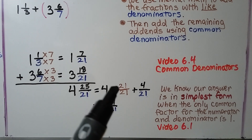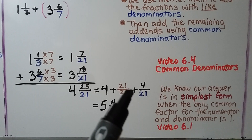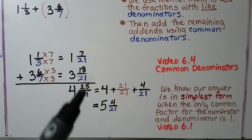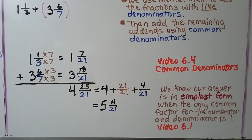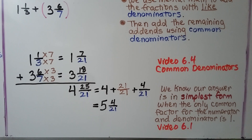4 and 25 twenty-firsts equals 4 plus 21 twenty-firsts plus 4 twenty-firsts. We can pull out 21 twenty-firsts, which equals 1, giving us 4 plus 1, which is 5, and 4 twenty-firsts. So we have 5 and 4 twenty-firsts. We know our answer is in simplest form when the only common factor for the numerator and denominator is 1, and this is in simplest form. If you missed learning how to make equivalent fractions and common denominators, it's linked in the description in video 6.4. Simplest form was also touched on in video 6.1.